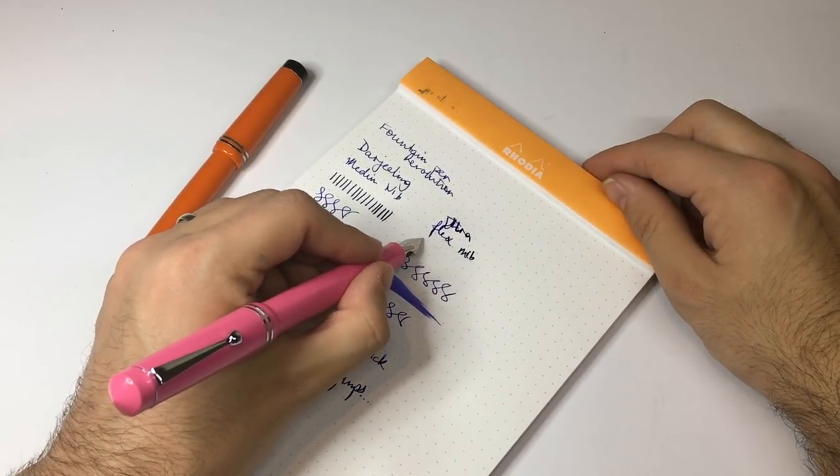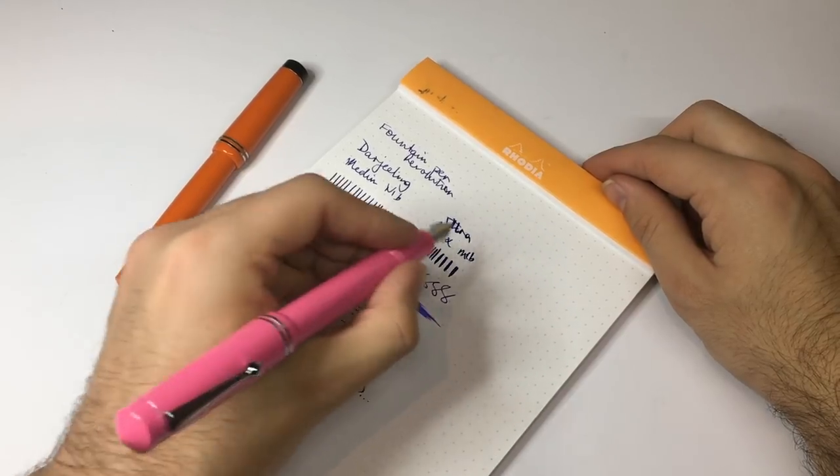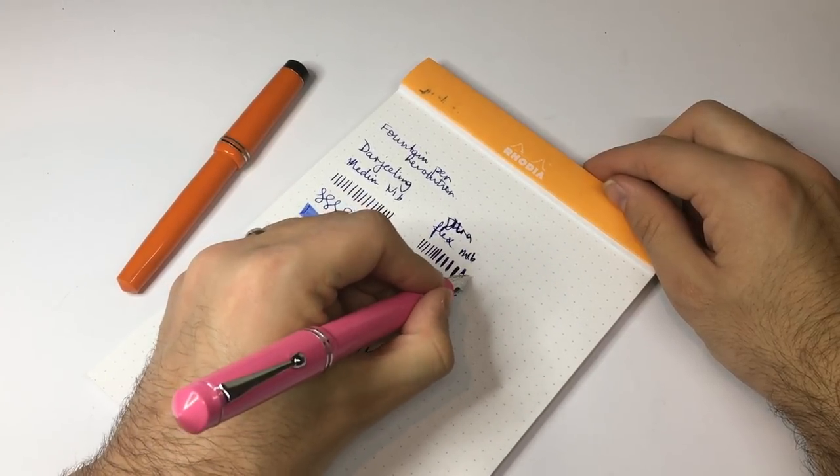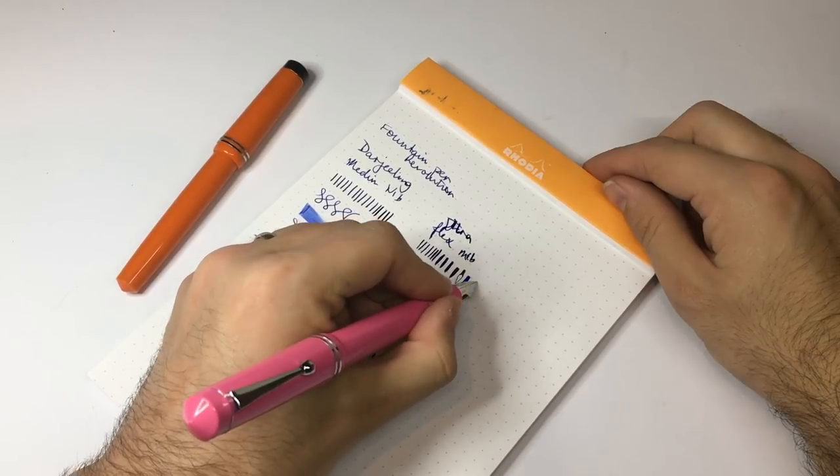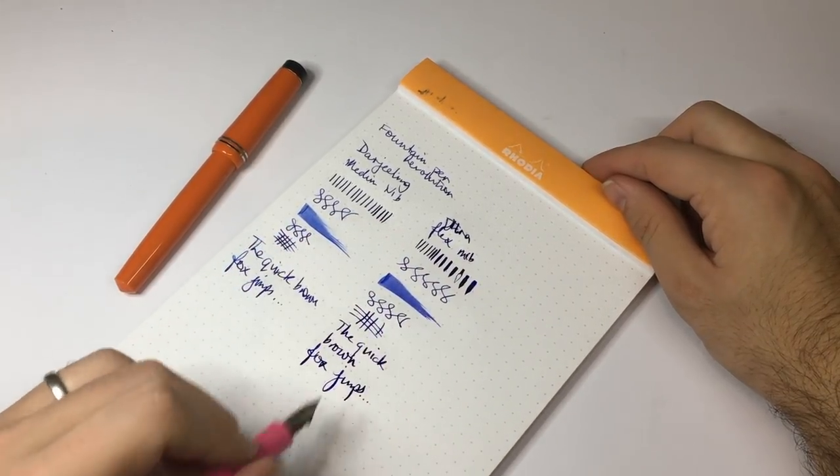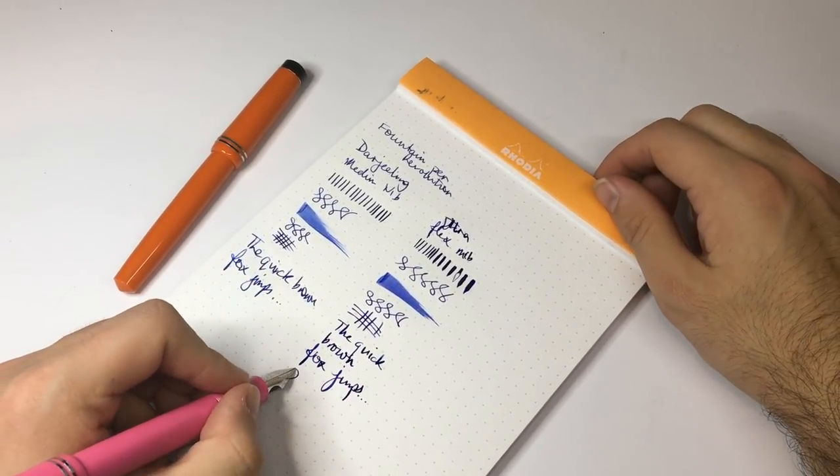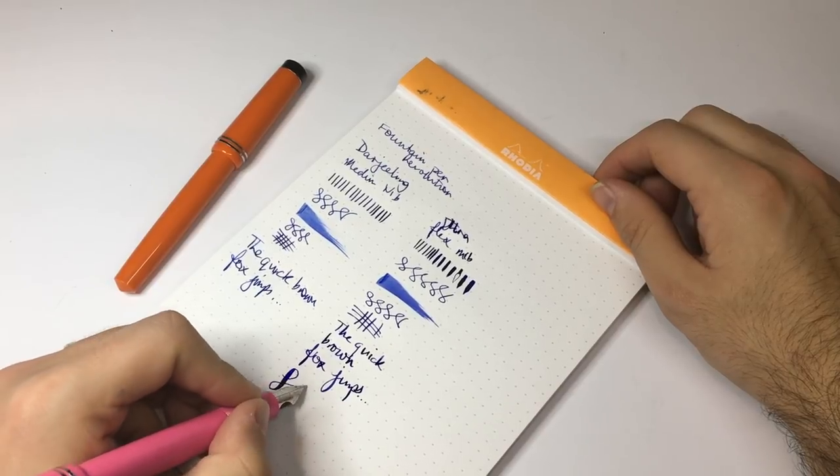So but what do we have this pen for? This is the ultra flex nib, so let's see if it has any flex to it whatsoever. So no pressure, and as I add pressure I'm going to slow down just so that we can allow it to open up. And there we go, railroading a little bit, but that's quite a lot of line variation from a modern nib.